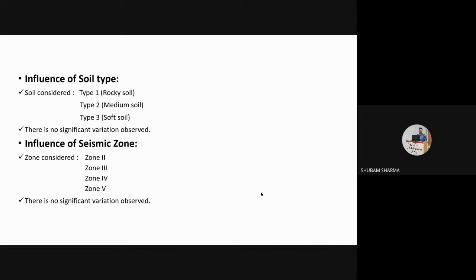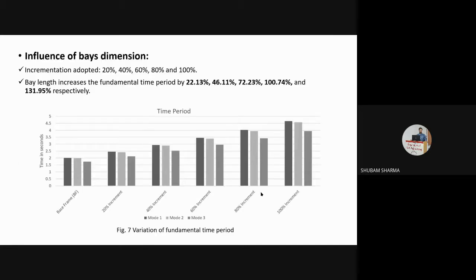Effect of bay length: the base bay length is 4.6 m in X and 4 m in Y direction. Incrementing bay length by 20%, 40%, 60%, 80%, and 100% increases the fundamental period by 22.13%, 46.11%, 72.23%, 100.74%, and 131.95% respectively. Effect of number of stories: the base model has 10 stories; incrementing by 2 stories each time up to 20 stories shows that 12-story buildings increase the fundamental period by 21.53%, 14-story by 43.76%, 16-story by 67.04%, and 20-story by 118.34%.